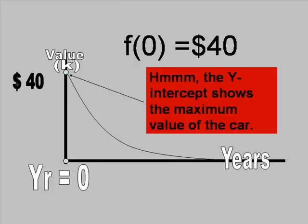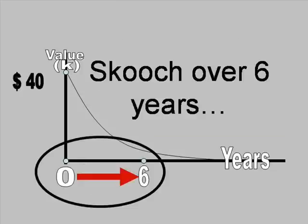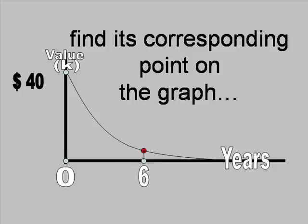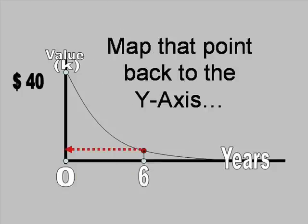The y-intercept shows the maximum value of the car. We scooch over six years to x equals 6, and we find its corresponding point on the graph. We map that point back to the y-axis.